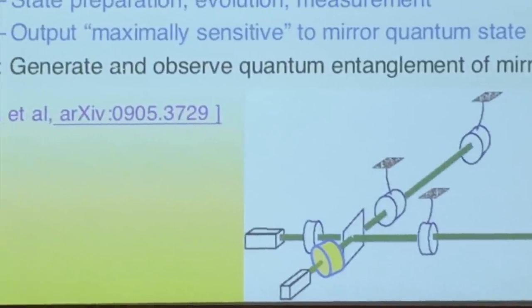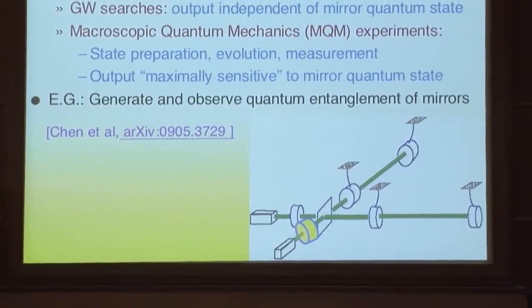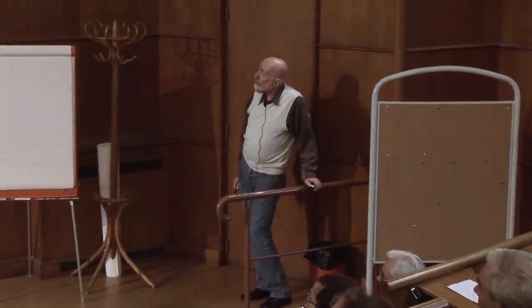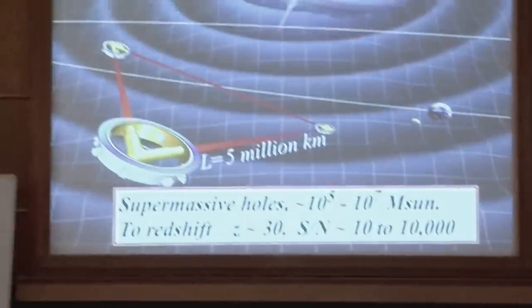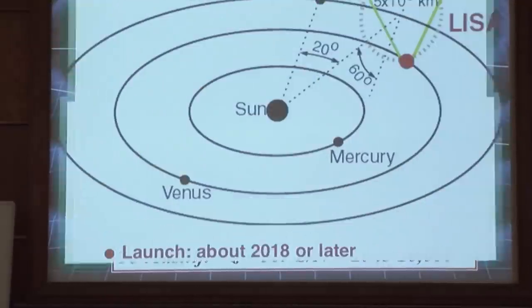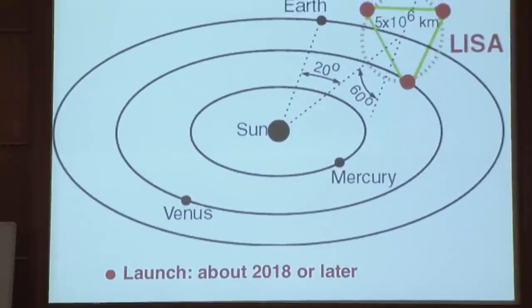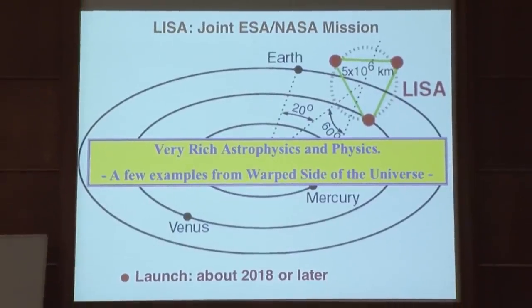Just a few words about LISA—the Laser Interferometer Space Antenna—going after gravitational waves from supermassive black holes out to redshifts corresponding to the earliest time in the universe that supermassive black holes form. LISA has three spacecraft tracking each other with laser beams, moving in the same orbit as the Earth around the Sun. There's very rich astrophysics and physics to be done with LISA; my Caltech colleague Sterl Phinney was here in Paris last year and talked about the astrophysics.